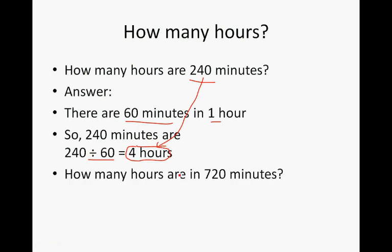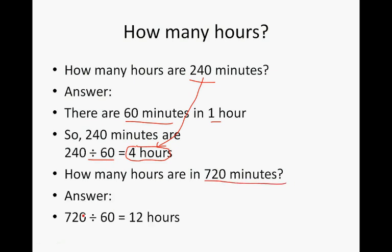How many hours are in 720 minutes? The calculation is 720 divided by 60, which equals 12 hours. So 720 minutes is equal to 12 hours.